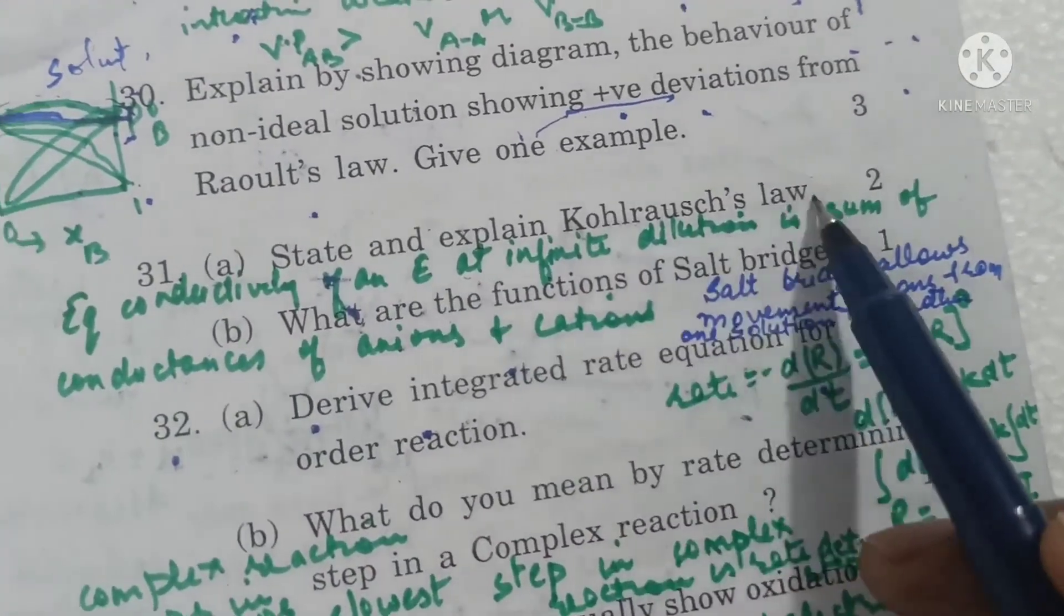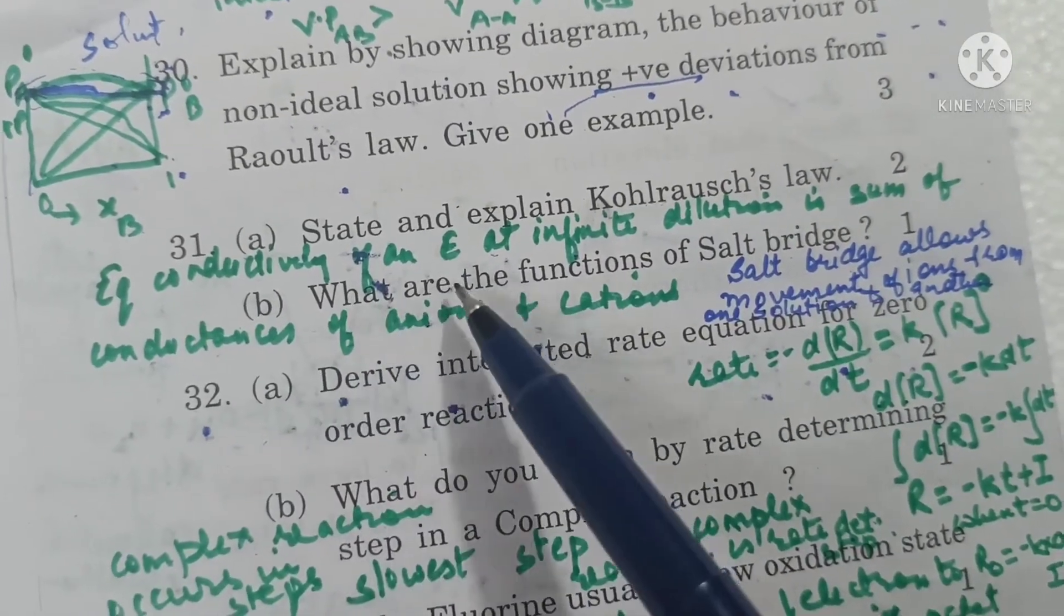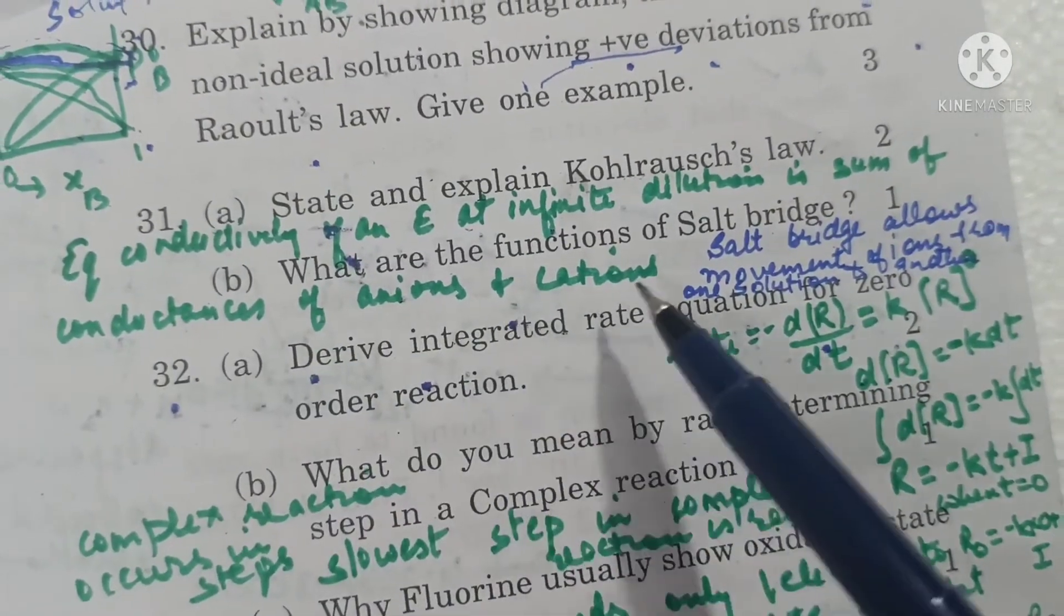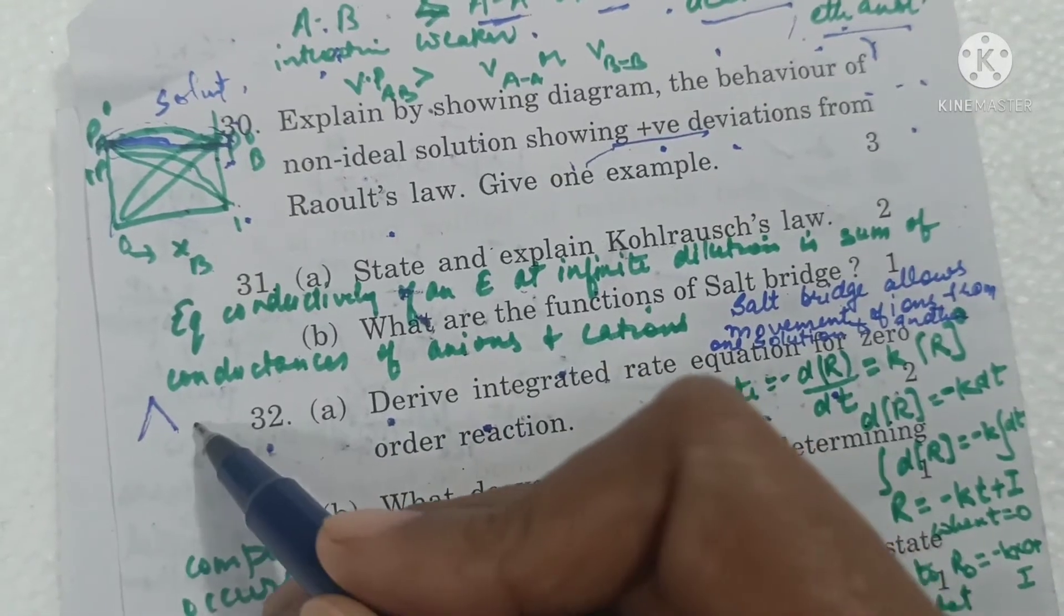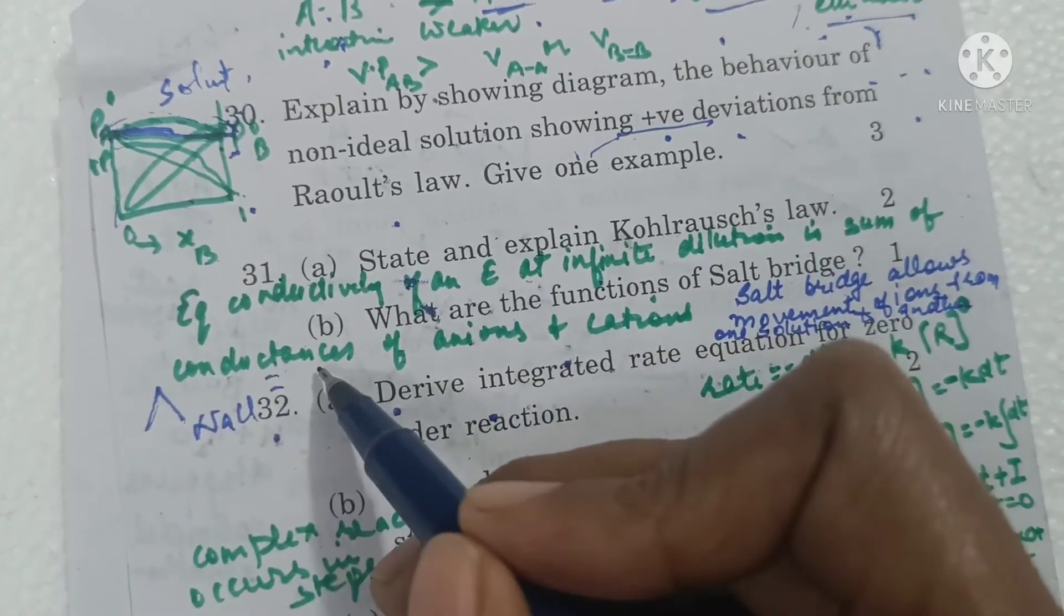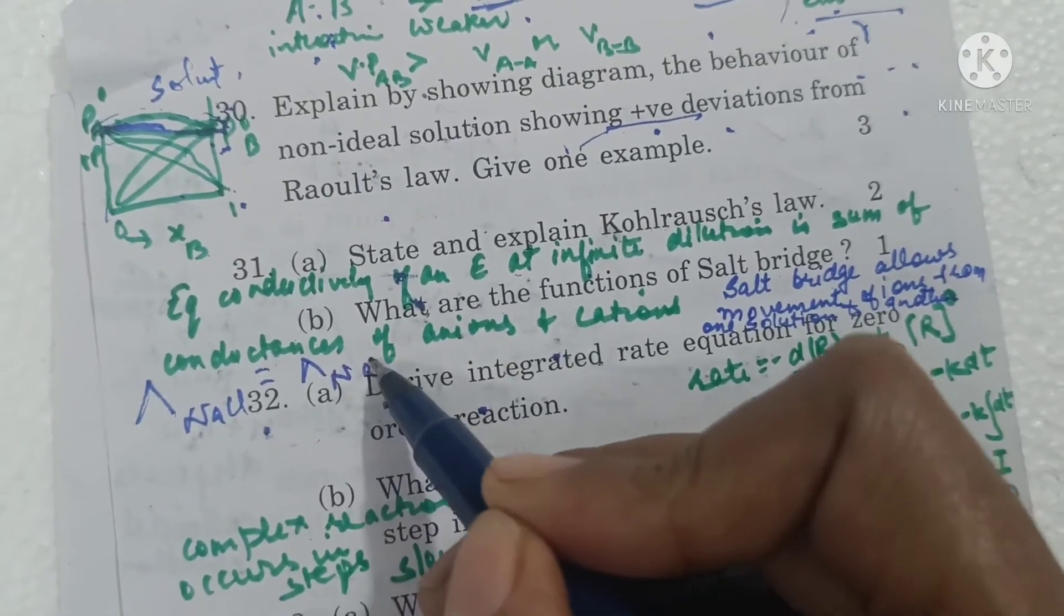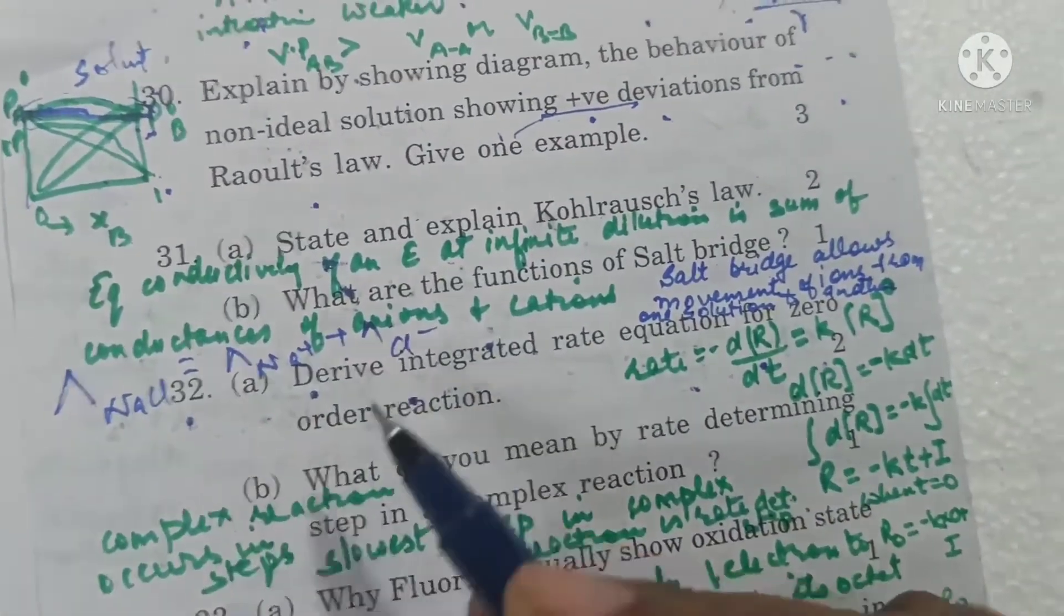State and explain Kohlrausch's law. It states that equivalent conductivity of an electrolyte at infinite dilution is the sum of the conductances of anions and cations. Total equivalent conductance for sodium chloride will be conductance of sodium ions plus conductance of chloride ions, cations and anions.